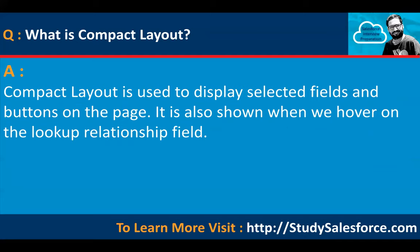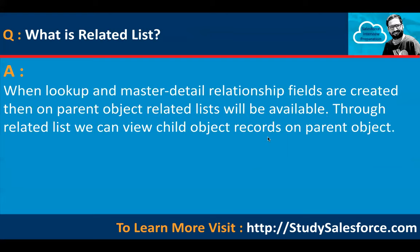What is a related list? When lookup and master-detail relationship fields are created, a related list will be available on the parent object. Through the related list, we can view child object records on the parent object.